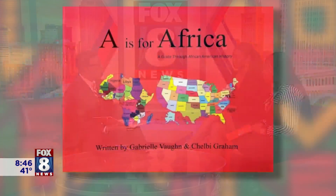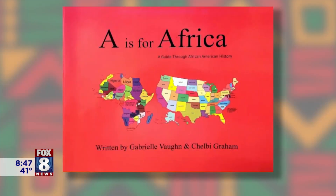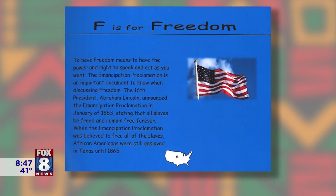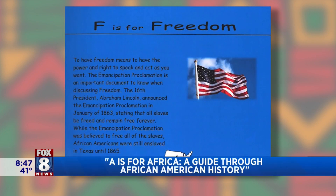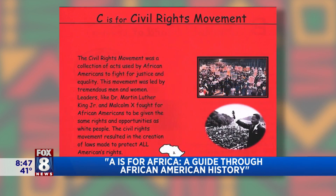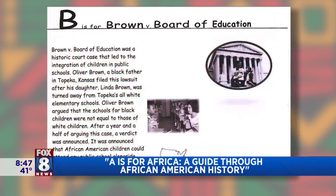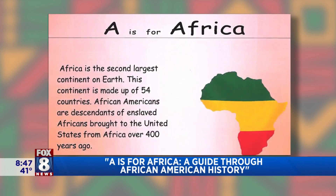Going through it, it covers sports and every field you can probably think of — every history you can think of. Obviously you start out: A is for Africa; B is for Brown versus Board of Education. We're looking at some of the pictures of the book as well. C is for Civil Rights, D is for Discrimination of Race, and all that kind of thing.